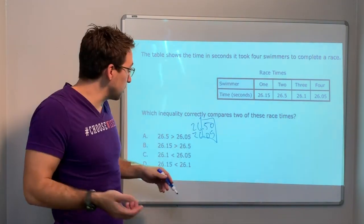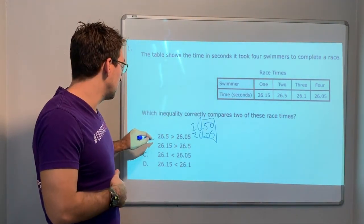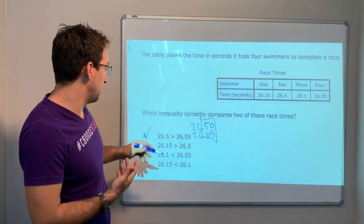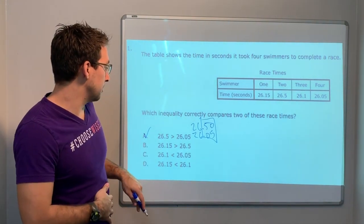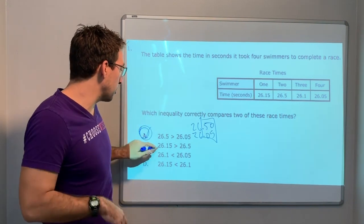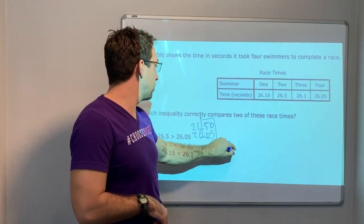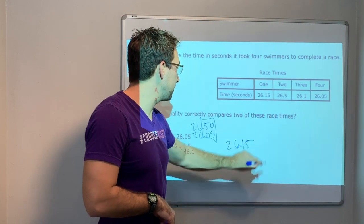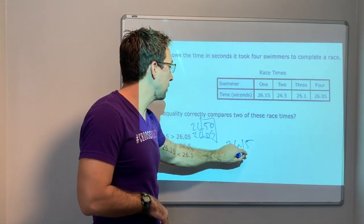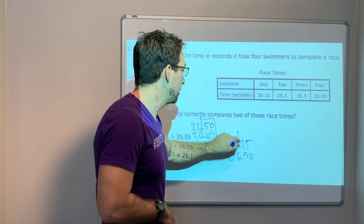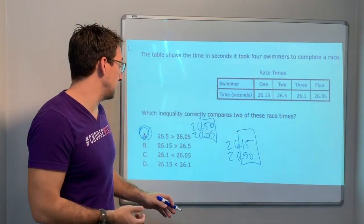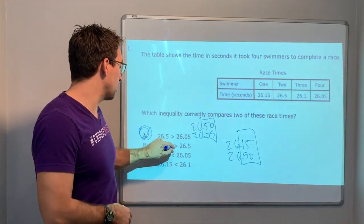Let's stack them. 26.5 is greater than 26.05 — look, 50 is bigger than 5, so that's correct. That's our answer. Let's check another one to be sure: 26.15 vs. 26.50. We see 15 is smaller than 50, so that one is wrong.